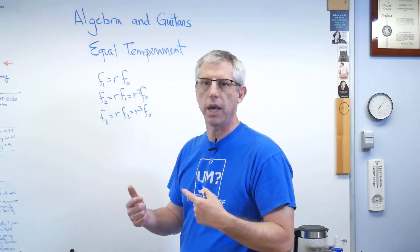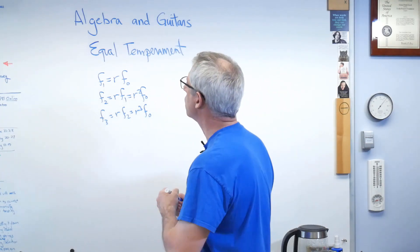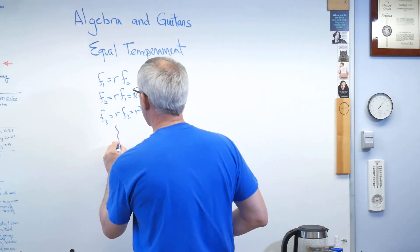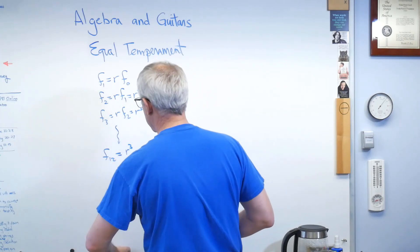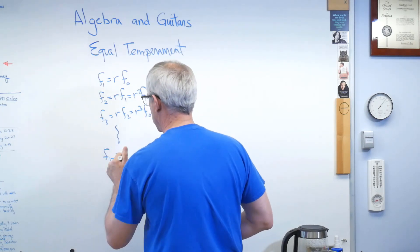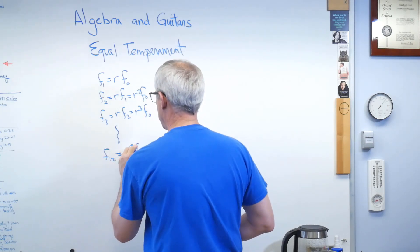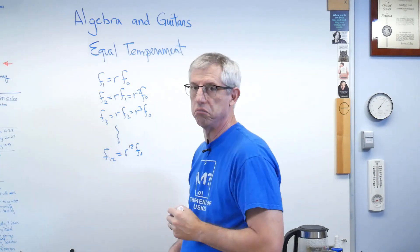Now, it's called an octave because a scale only uses eight of those twelve notes. But when you get all the way down here, F12 is R to the twelfth F0.